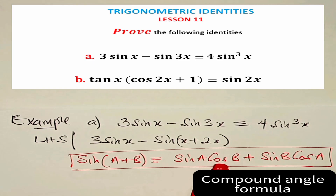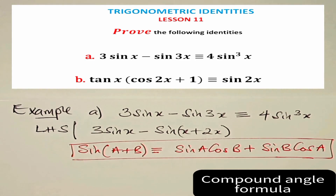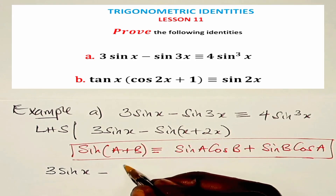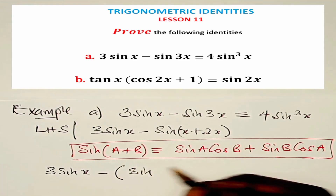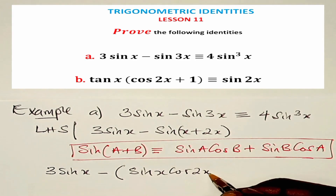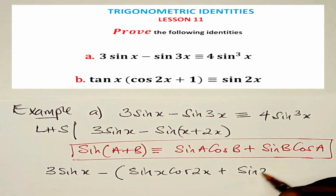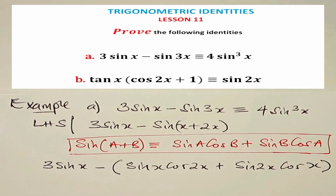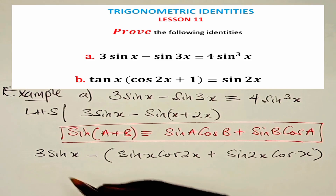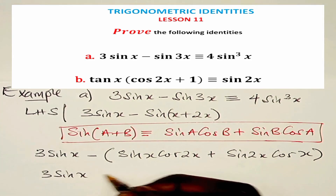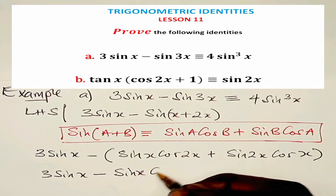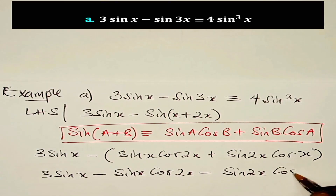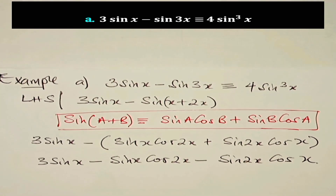Now we shall use that on that term. Then we write the left hand side as 3 sine x minus (sine x cos 2x plus sine 2x cos x). Now let's remove the brackets. We have 3 sine x minus sine x cos 2x minus sine 2x cos x.